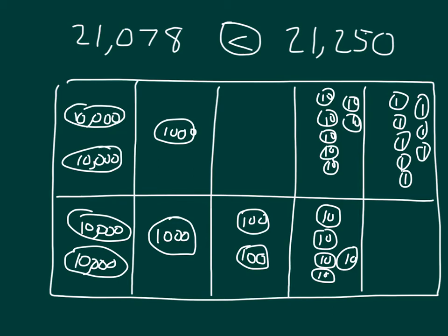It is the number with the greater value. Let's read this entire number sentence again: twenty-one thousand seventy-eight is less than twenty-one thousand two hundred fifty.